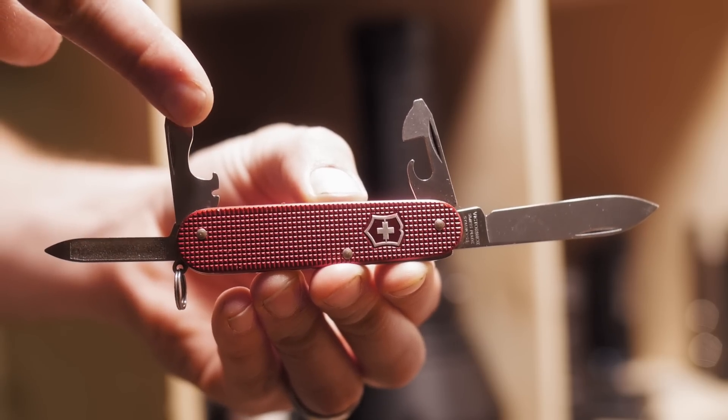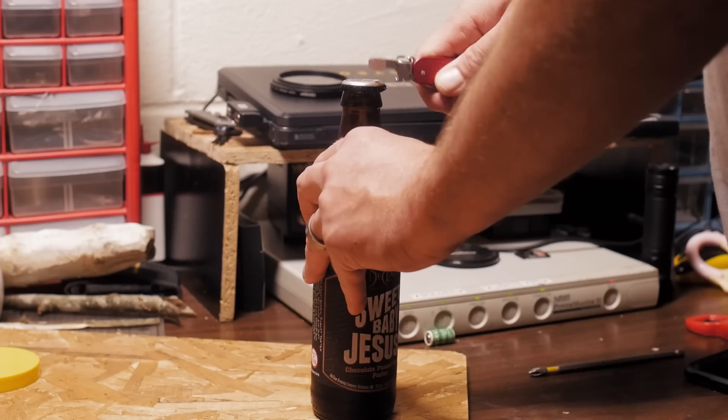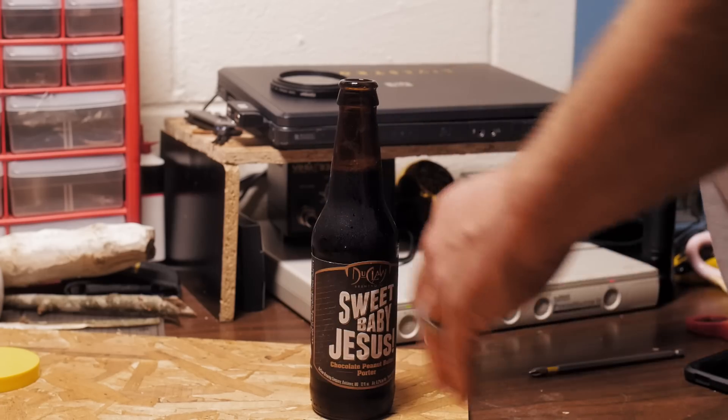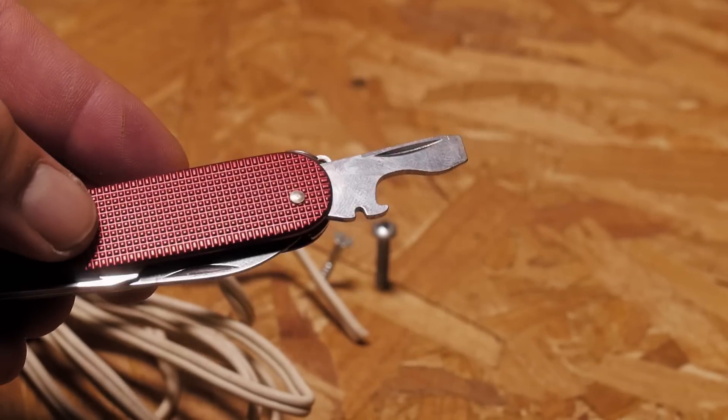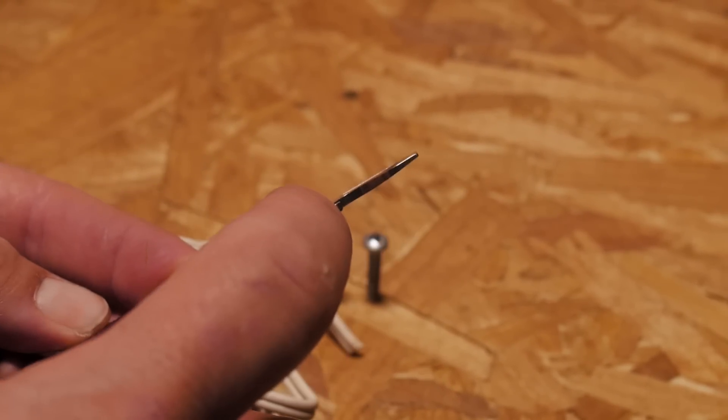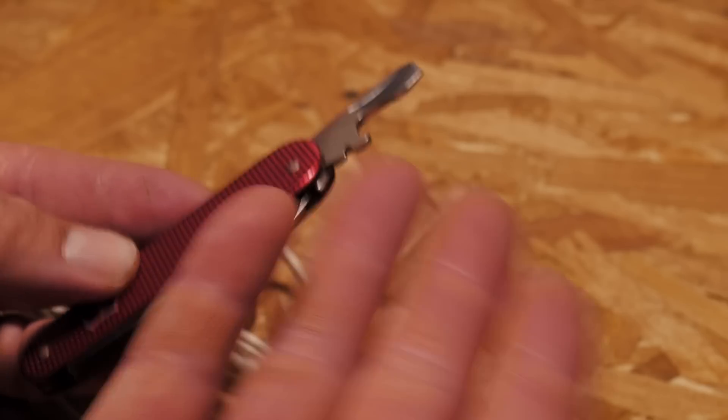And finally the 4th tool, the beer opener. It doesn't work on soda bottles, sorry. Then there's of course the wire bender part of this tool. I'm sure there's a good reason why a non technician person who only carries a swiss army knife would need to bend and cut a wire, right?